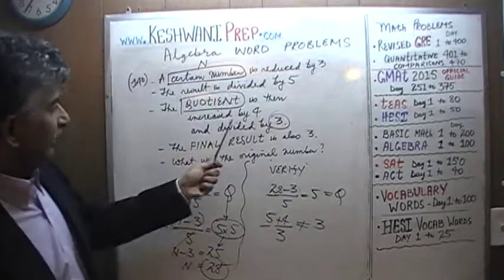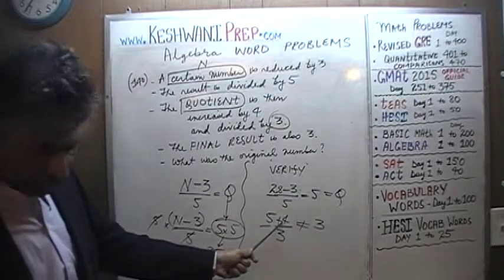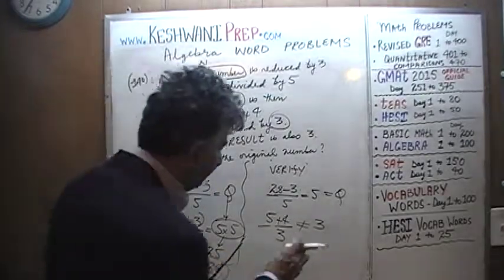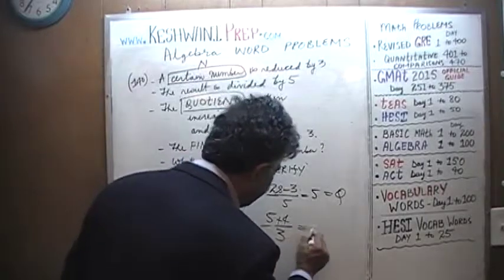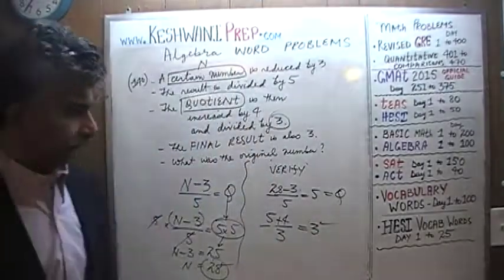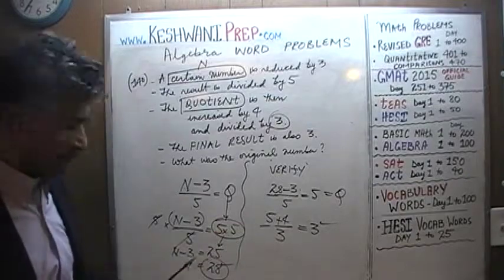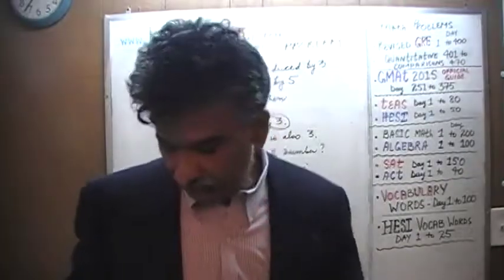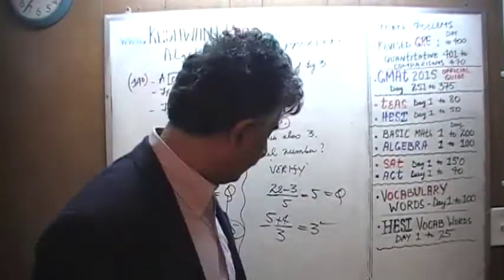The quotient is then increased by 4. 5 plus 4 is 9. 9 divided by 3. 9 divided by 3 is indeed 3. That means our answer is correct. 28 is the correct answer. 18 was not. Because it was not making any sense. It wasn't working out.